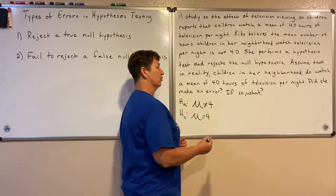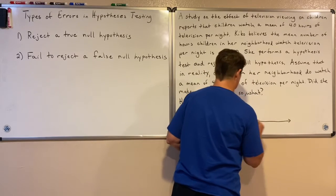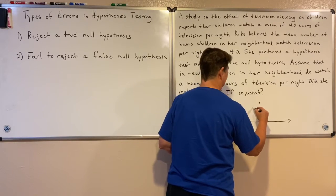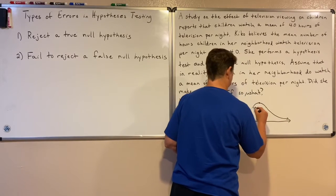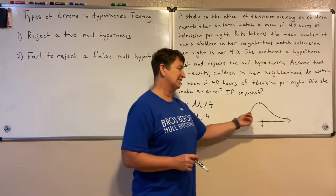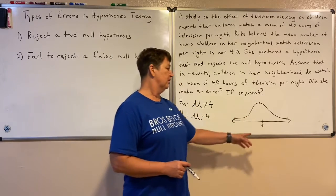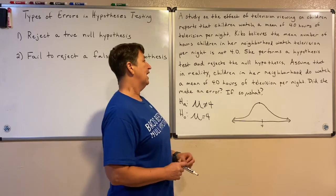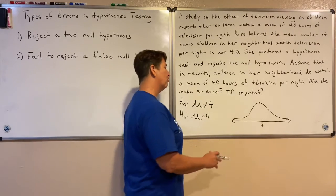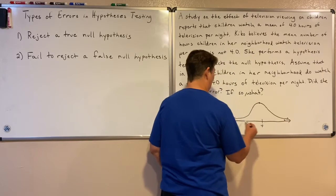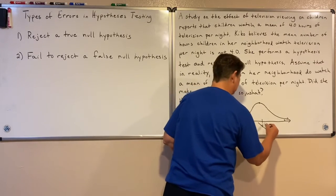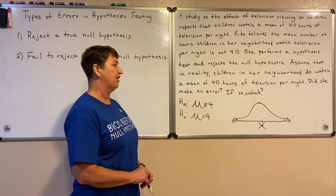She goes out and performs a hypothesis test. Assuming she collects a simple random sample of at least 30 kids in her neighborhood, the sample mean will be part of a sampling distribution that is approximately normal with a mean equal to the population parameter. She rejects the null hypothesis — meaning she got some value so far out, either way up or way down, that she said it's statistically significant enough to reject the null.